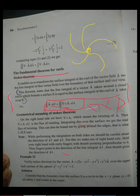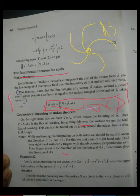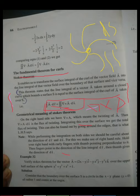We integrate del cross A — that is the curl — over the whole surface. We put a small area element dS into del cross A, that is curl, and integrate over the whole surface. That is the surface integral of del cross A dot dS — the curl integrated over the entire surface.